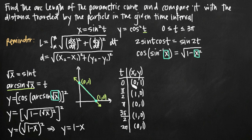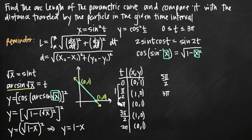The particle bounces back and forth six times over the interval from 0 to 3 pi. Moving from 0 to pi over 2 is one traversal, pi over 2 to pi is two, pi to 3 pi over 2 is three, 3 pi over 2 to 2 pi is four, 2 pi to 5 pi over 2 is five, and 5 pi over 2 to 3 pi is six. So it moves back and forth across the line segment six times.